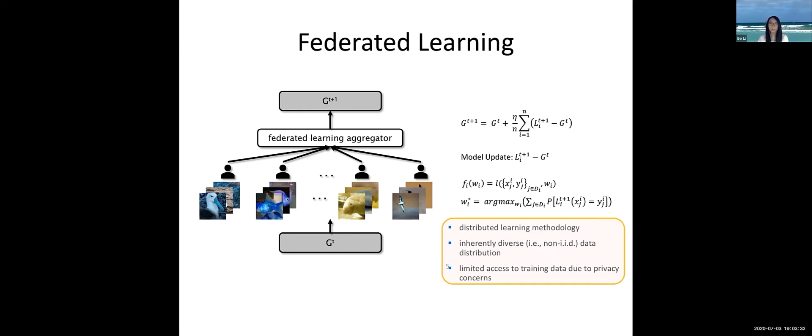I think everyone here is very familiar with federated learning. Basically, we have several agents, each with certain datasets. They can train a local model with their own dataset and send their model weights to the aggregator. The aggregator helps to aggregate the parameters together and sends them back to each individual, who can use that information to improve their models.